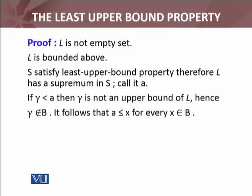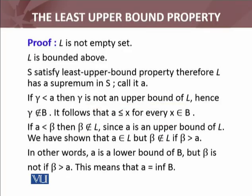If gamma is less than A — if any gamma number is less than A — then gamma is not an upper bound of L, by definition of upper bound, hence gamma does not belong to B. Because all members in B are upper bounds of set L. Now it follows from the definition that A is less than or equal to X for every X belonging to B. Then if A is less than beta, then beta does not belong to L, by definition of upper bound and lower bound.